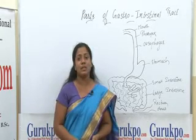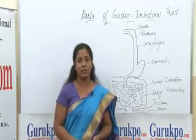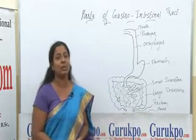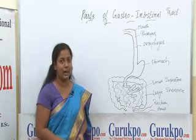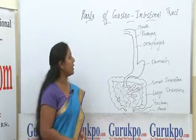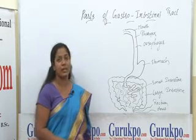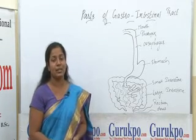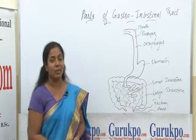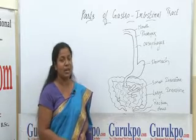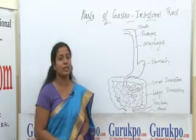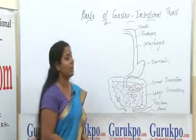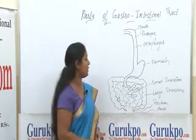The stomach is a part which stores food; it contains 1.5 liters of food at a time. It is divided into 3 parts: fundus, body, and pyloric region. It has 2 curvatures: the greater curvature and the lesser curvature.